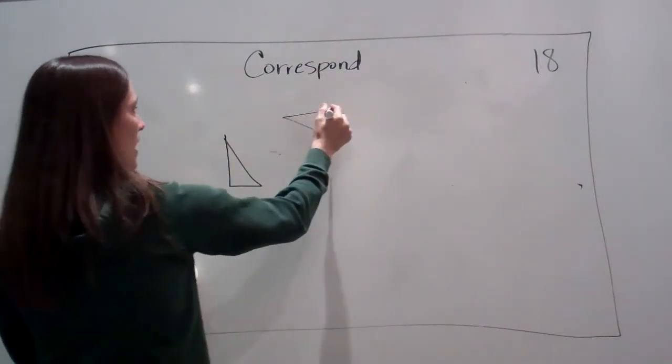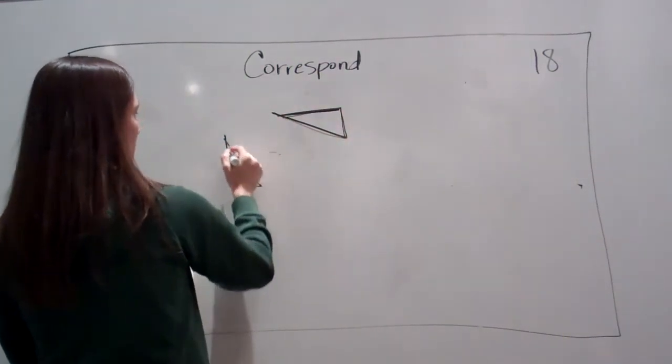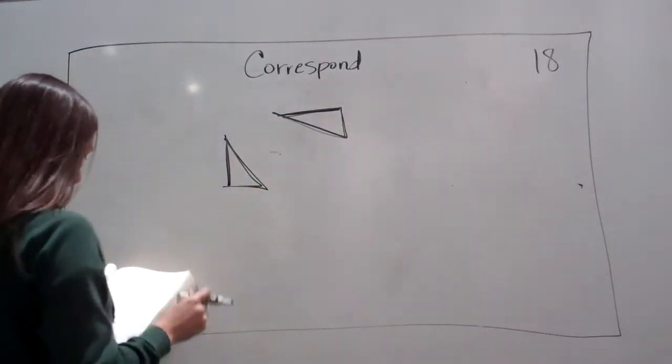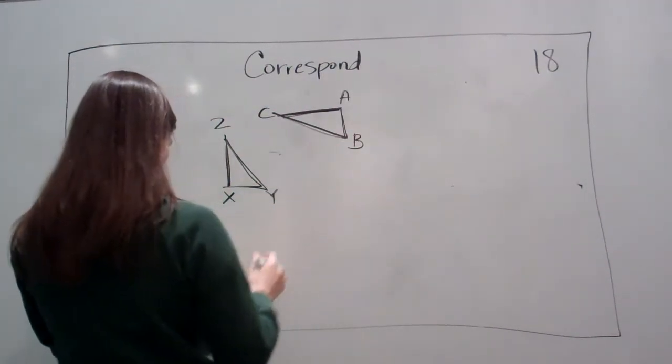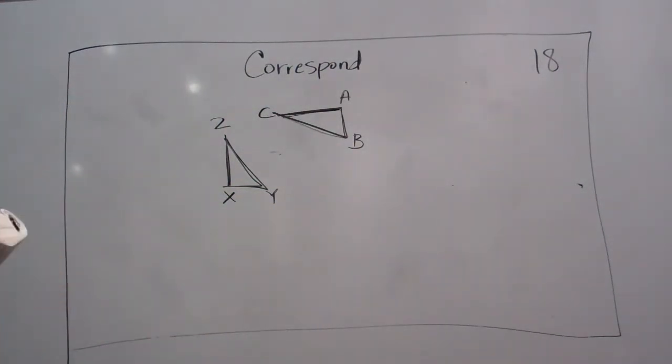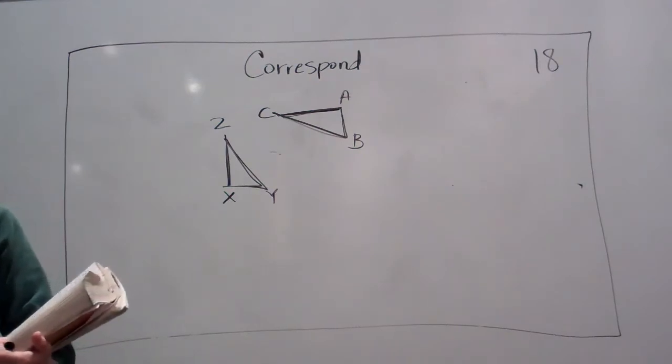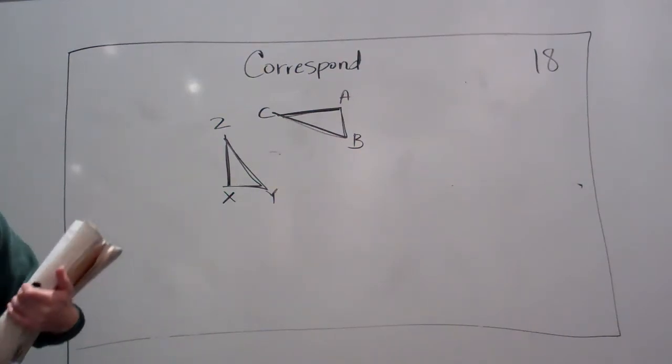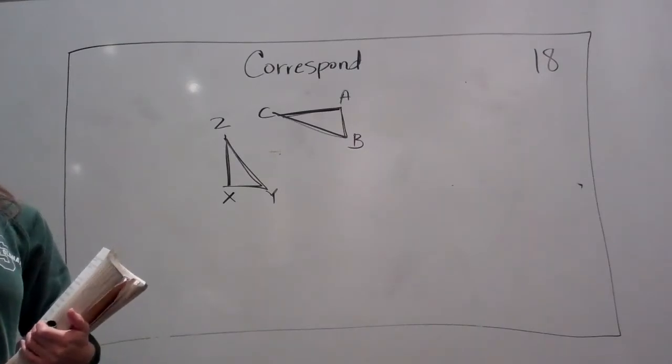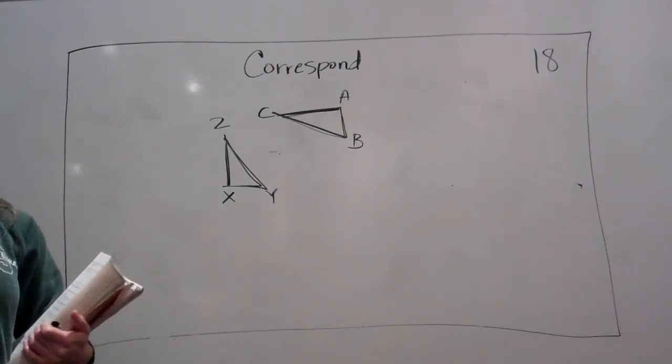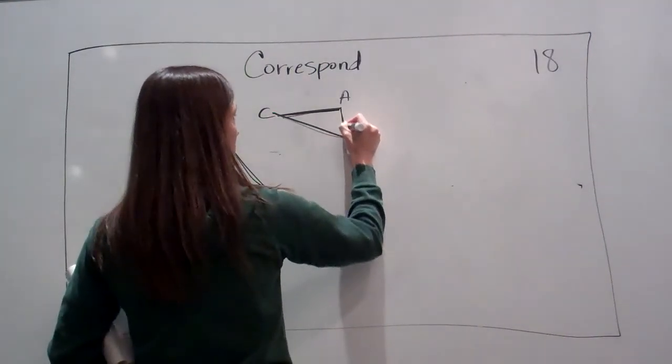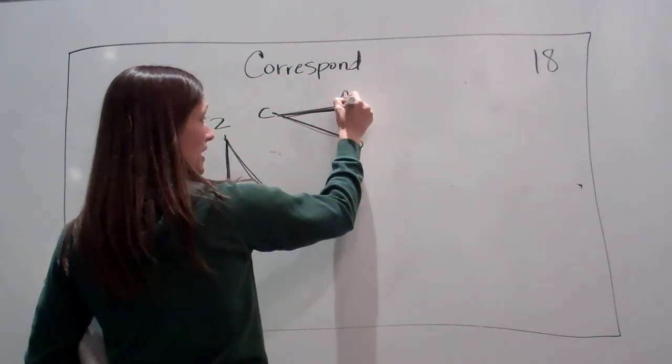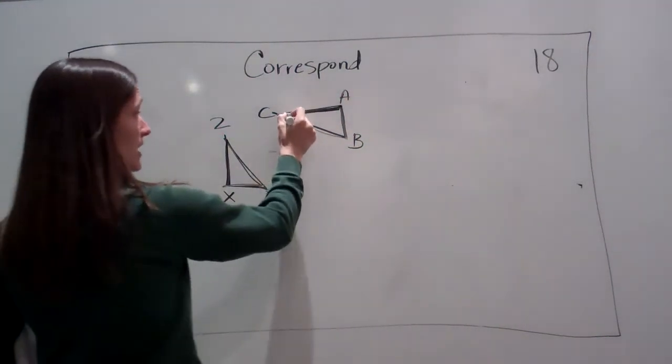Okay. Imagine them being the same size. I tried to do that. Something like that. Okay. This one's labeled XYZ. This one's labeled ABC. Now, what I encourage you to do when they're asking you which corresponds with which, it's hard to see that right here. Can everybody see that?